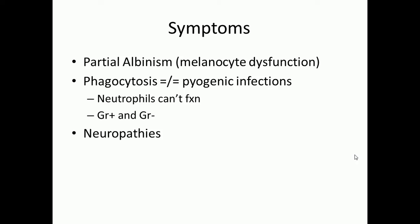Let's look at some of the symptoms of Chediak-Higashi syndrome. One of the main ones is partial albinism, which is due to melanocyte dysfunction. Melanocytes are thought to use microtubules, so if you have that dysfunction, you'll see lighter skin, grayish hair, or partial albinism symptoms. It won't be true albinism, but you may see an albinism-like presentation.